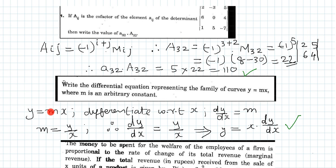We have to eliminate the arbitrary constant M. From the equation y = Mx, M is equal to y/x. Substituting this value of M into the differential equation, we get dy/dx = y/x. That implies y = x · dy/dx. That is the differential equation representing the family of curves y = Mx.